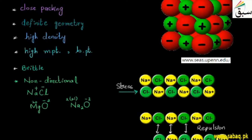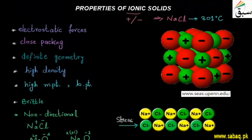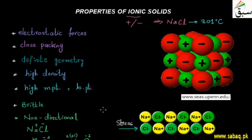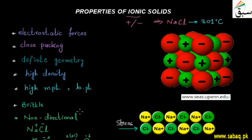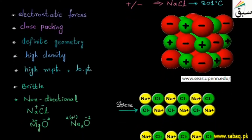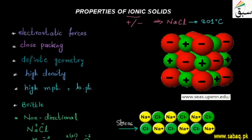So here we have discussed some properties of ionic solids. In summary: ionic solids have positive and negative ions with very strong electrostatic forces, close packing, and definite geometry — which is why they have high density, high melting and boiling points, and are brittle because applying stress disturbs the layer arrangement causing repulsion and breaking. They are also non-directional, because the positive and negative ions cancel out the charge effect, making the solid electrically neutral overall.